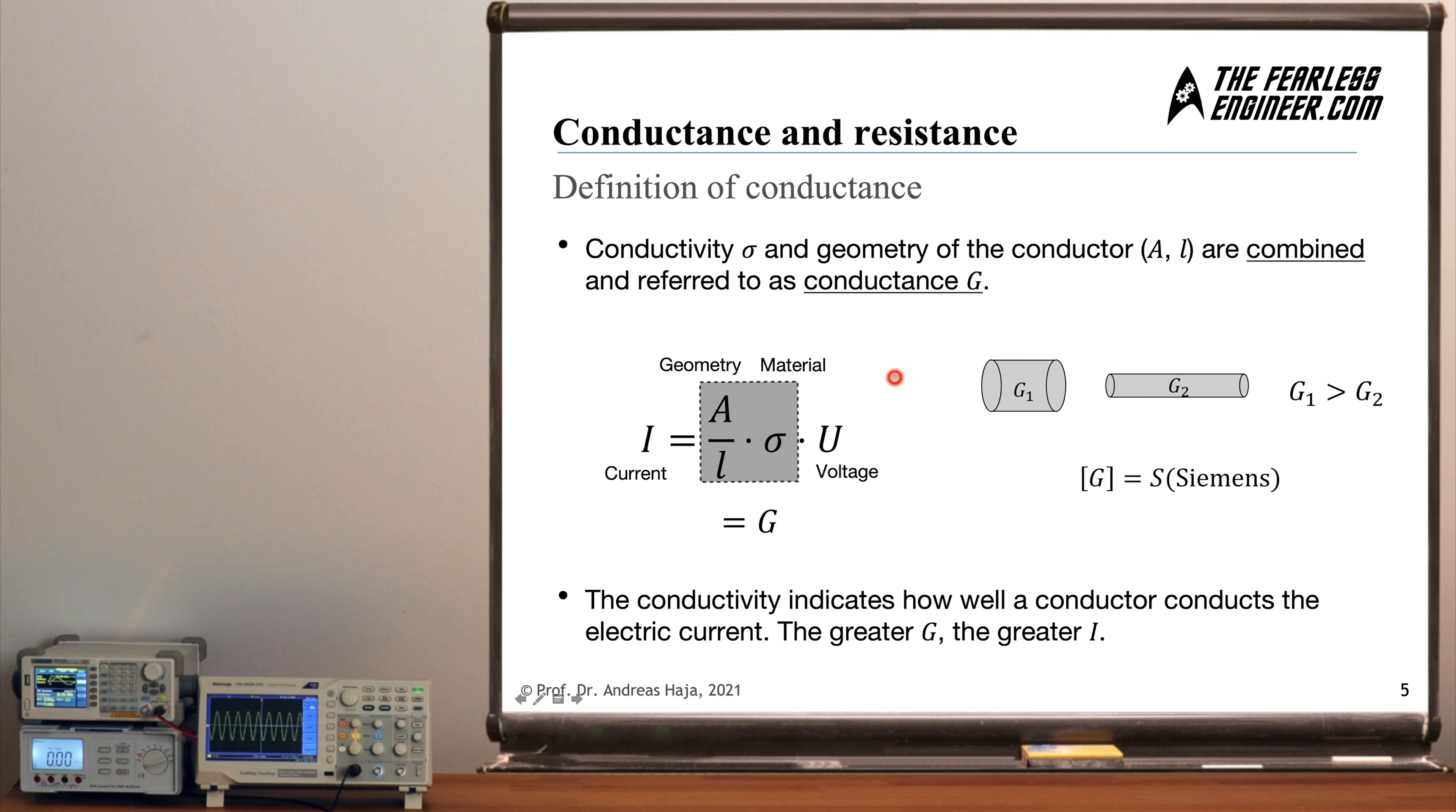But before we get there, let's introduce the concept of conductance. It's an expression which is very similar to the concept of conductivity, but it's something different because it includes conductivity and adds to it the material properties of the conductor. So these three parameters combined, cross-section area A divided by the length L multiplied with the conductivity of the respective material, this is what we call conductance G. And the conductance G is multiplied with a voltage. So we now have a very simple relationship between the current and the voltage. We simply need to multiply voltage by G, and what we get is the current I.